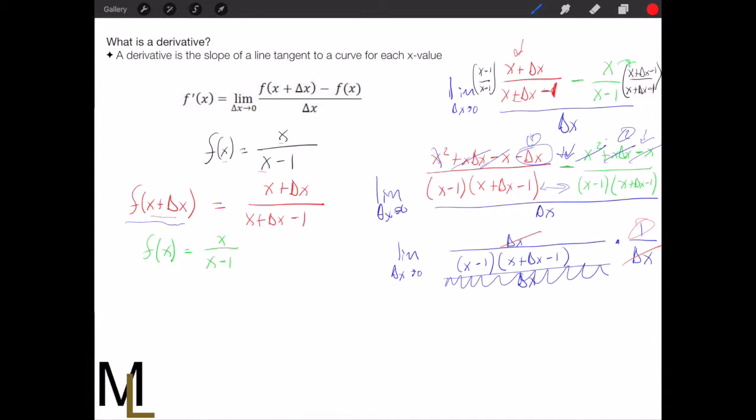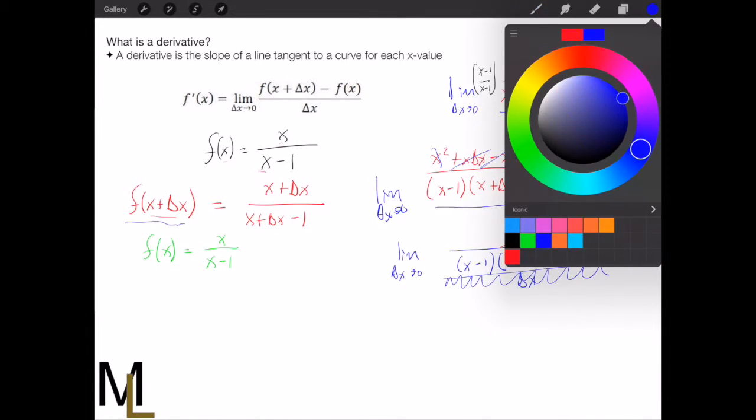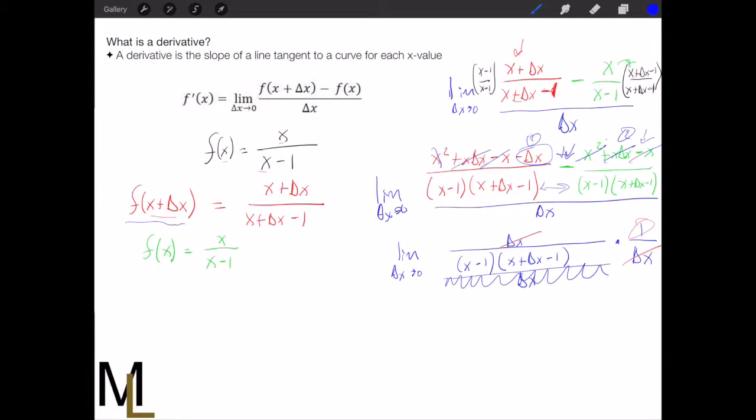So we have one left over and now we can rewrite all this again as the limit as delta x goes to zero of one over x minus one times x plus delta x minus one.